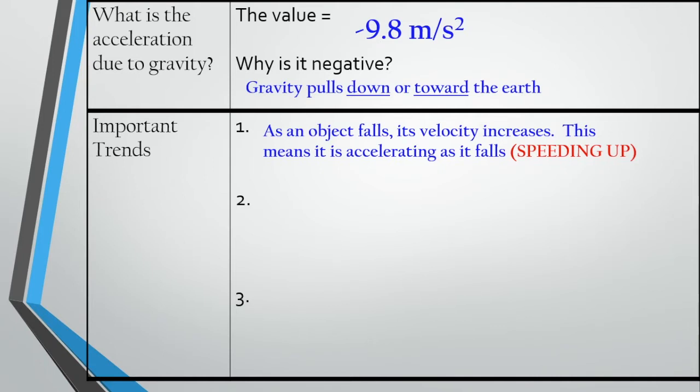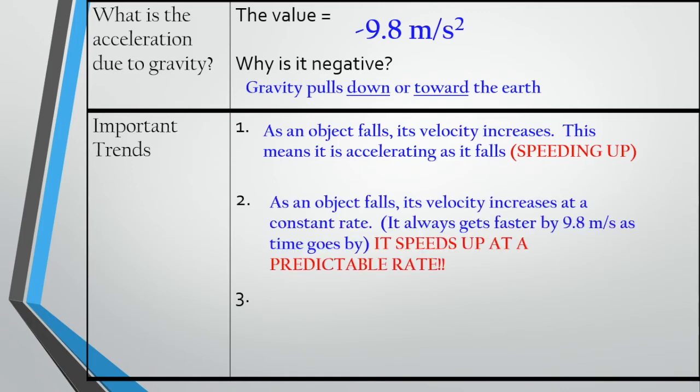As the object is falling, its velocity is increasing. By increasing, we mean that the magnitude or the size of the velocity is getting bigger and bigger. The velocity itself is becoming more and more negative because the object is moving downwards and speeding up as it moves down. The object's velocity increases at that constant rate of gravity — always getting faster by 9.8 meters per second as time goes by, at a predictable rate.